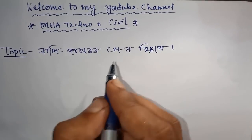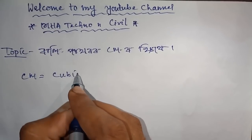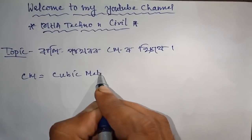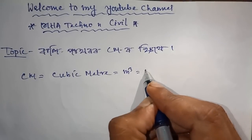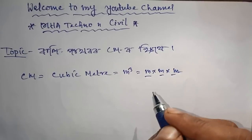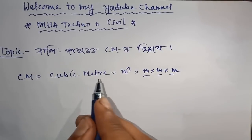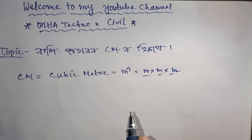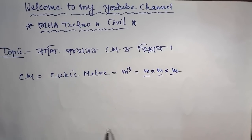CM means cubic meter. CM is equal to cubic meter, which is meter cube - meter upon meter upon meter. So CM equals cubic meter, m³, which is m × m × m.